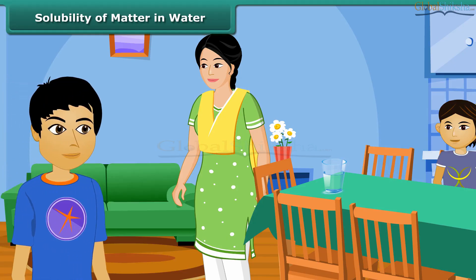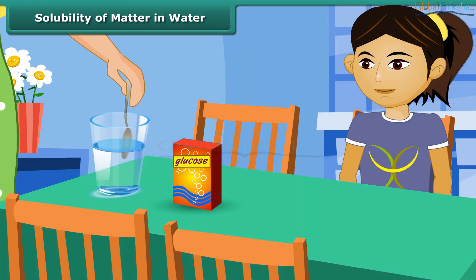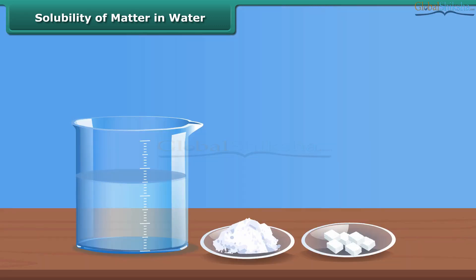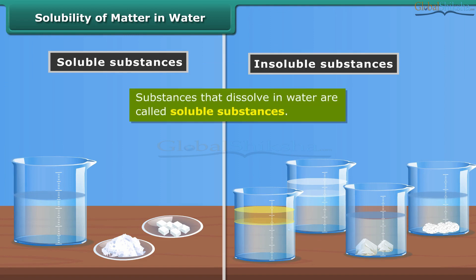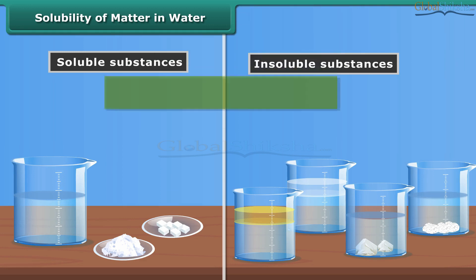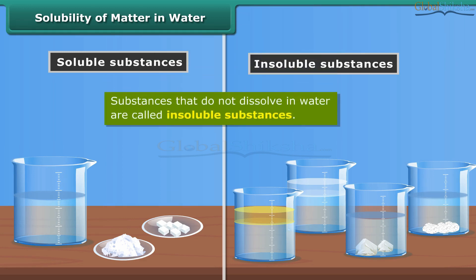Pyle's brother comes back home after a football match, drenched in sweat. Her mother adds a spoonful of glucose to water and gives it to him for instant energy. Pyle notices that glucose dissolves in water instantaneously. She experiments further and observes that some substances dissolve easily in water, like salt and sugar, while others do not dissolve, such as coconut oil, mustard oil, stone, and marbles. Substances that dissolve easily in water are called soluble substances. Substances that do not dissolve in water are called insoluble substances.